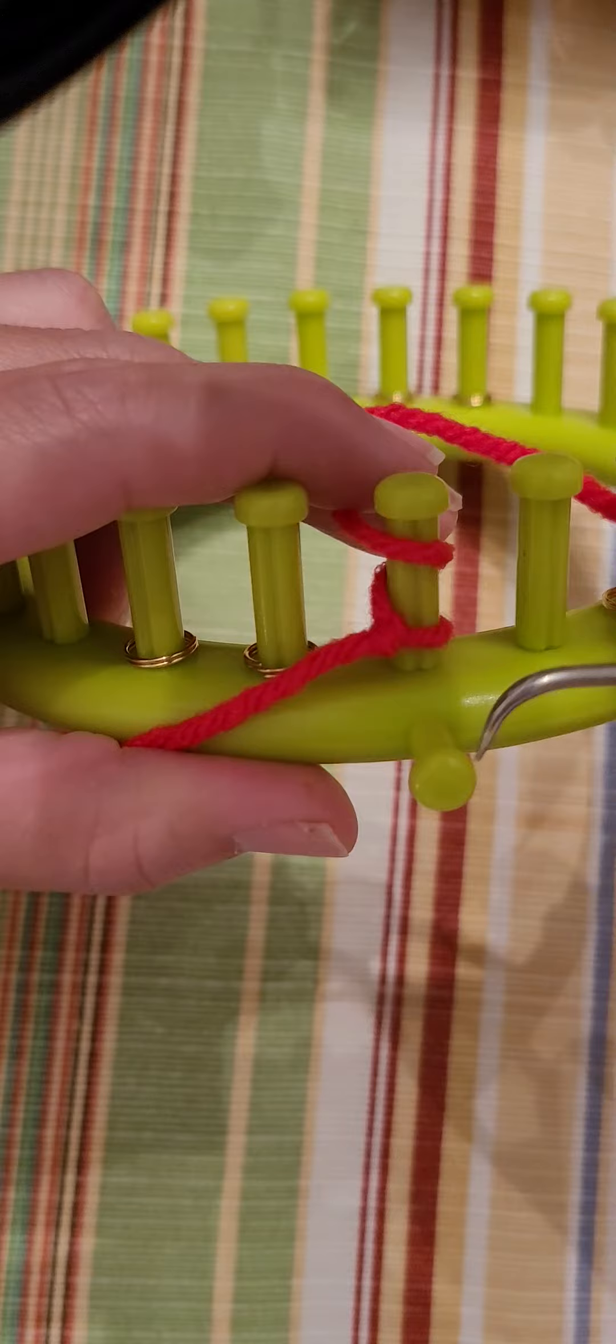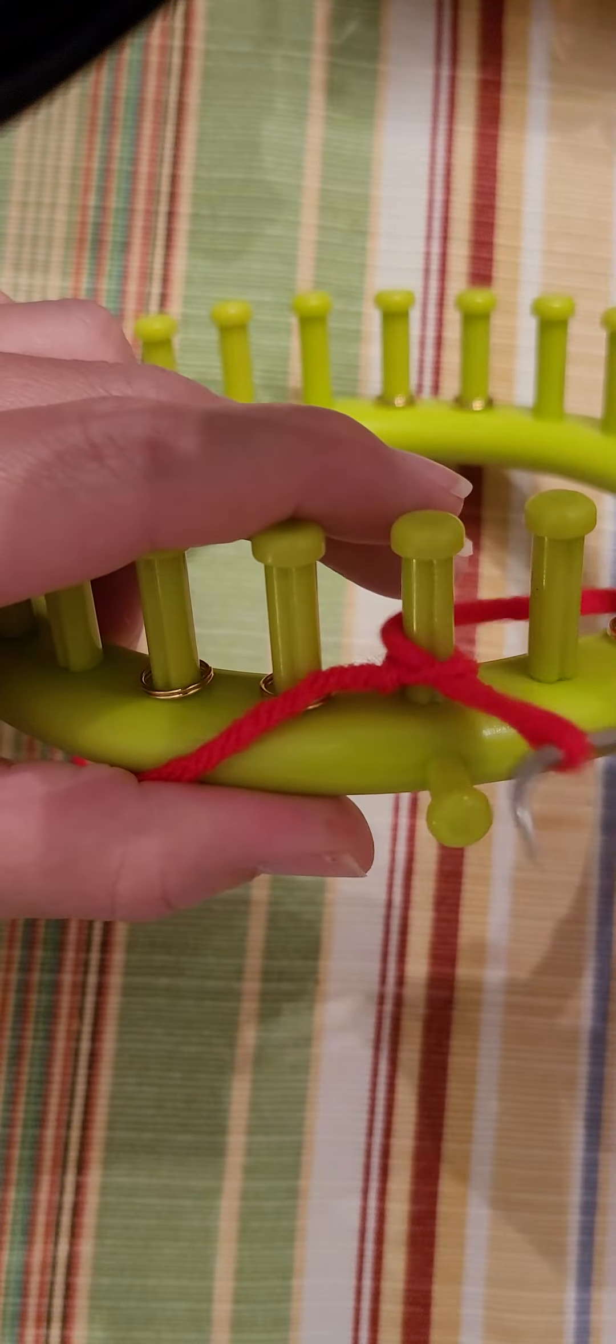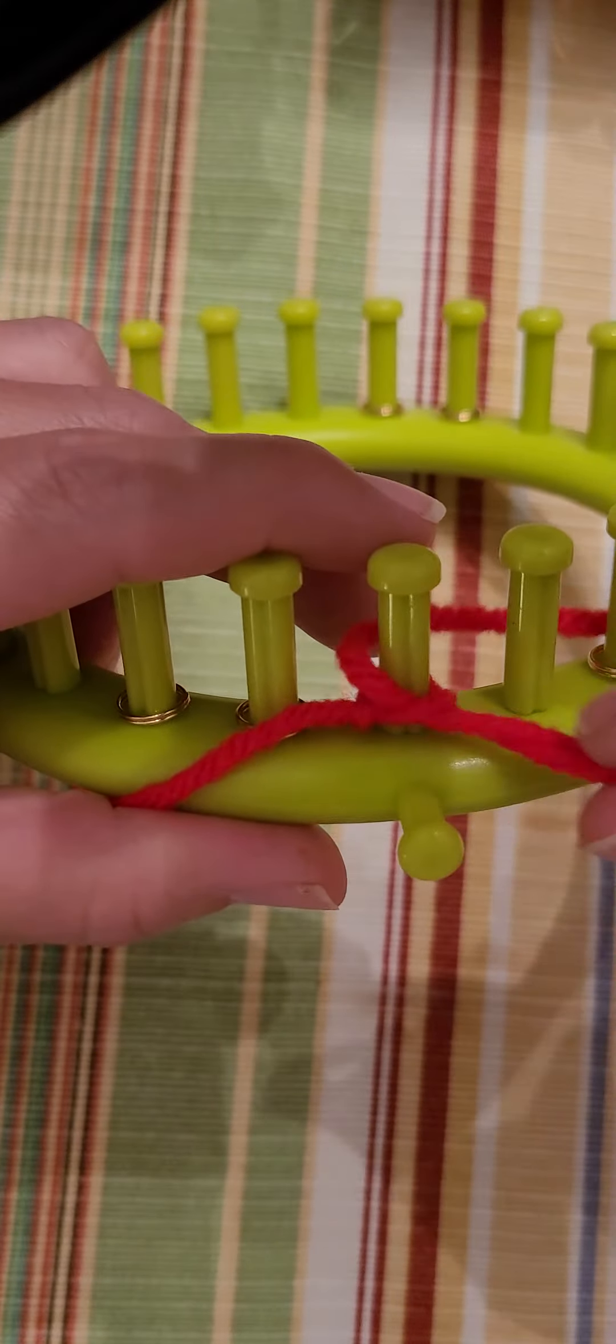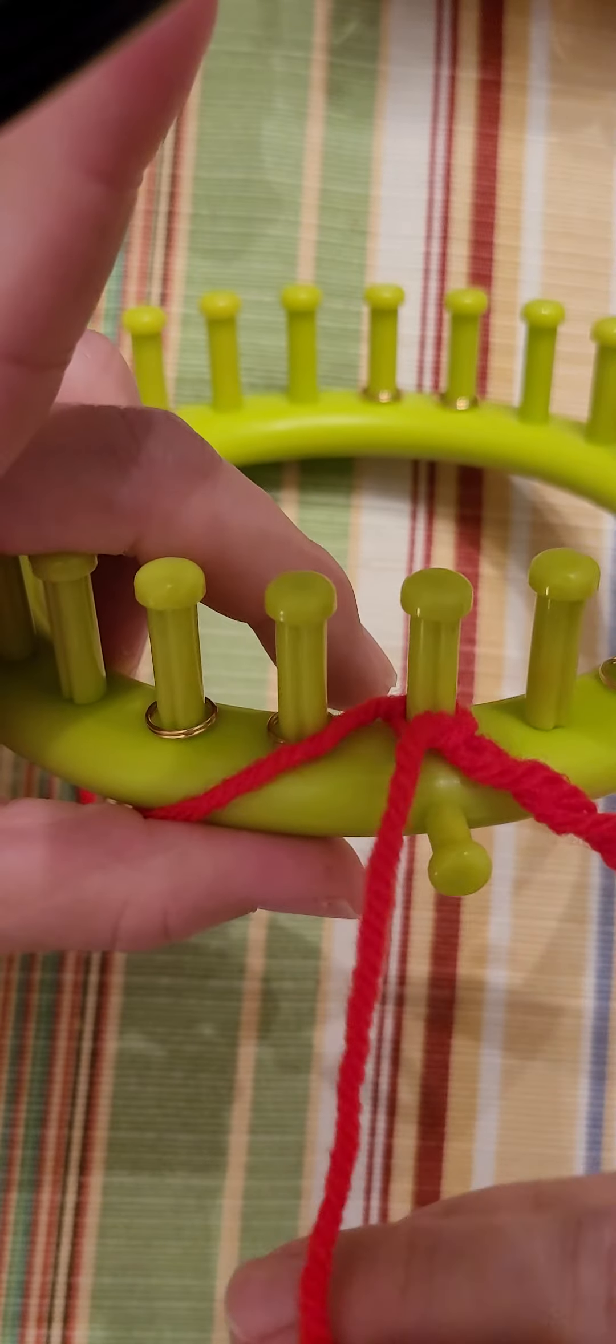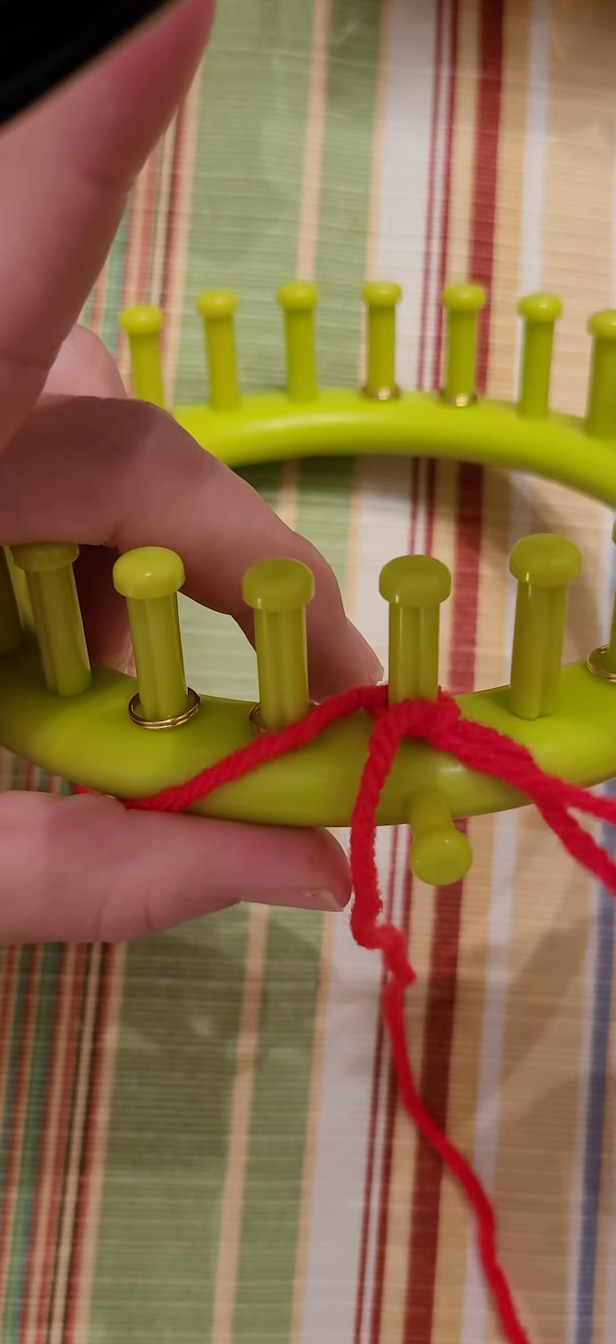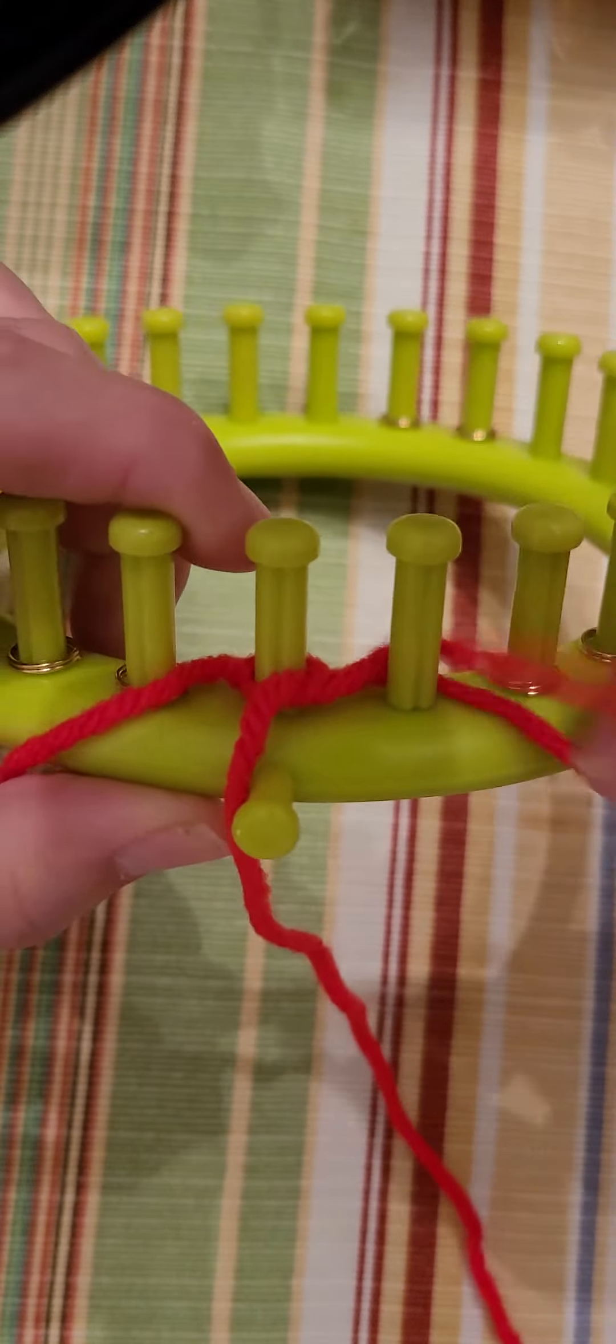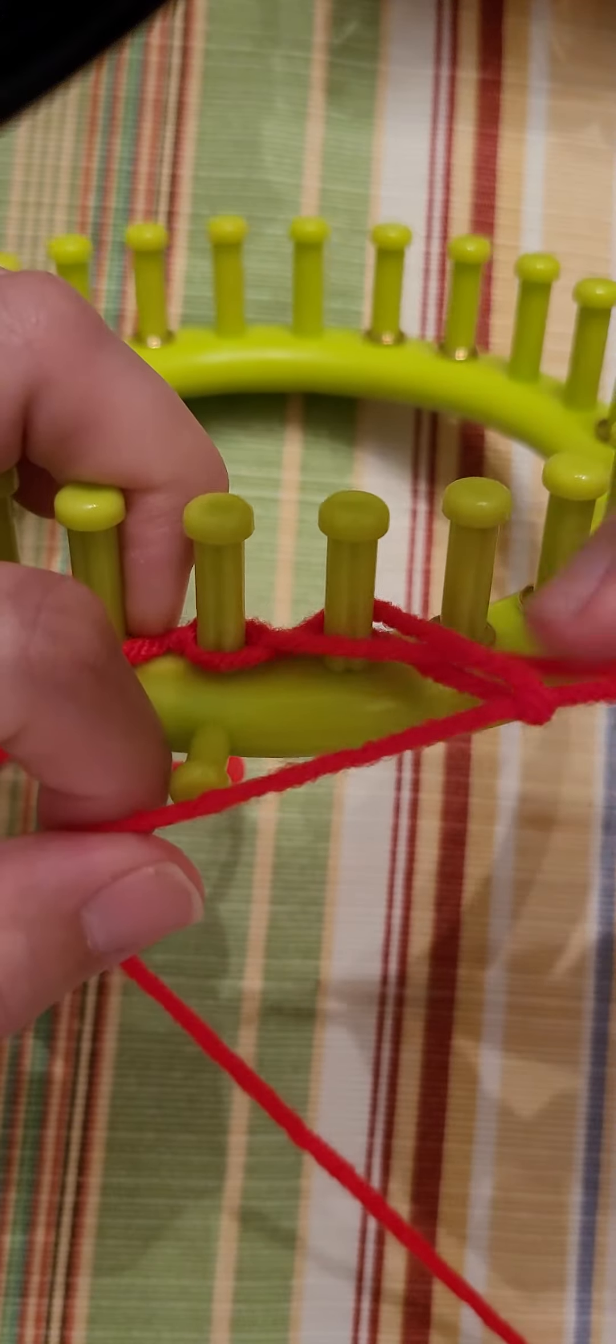Wrap the first peg twice in the bottom up, face the loop, behind the peg, bring it through.